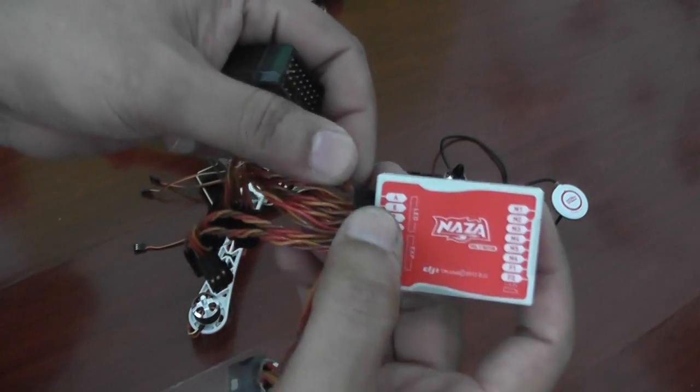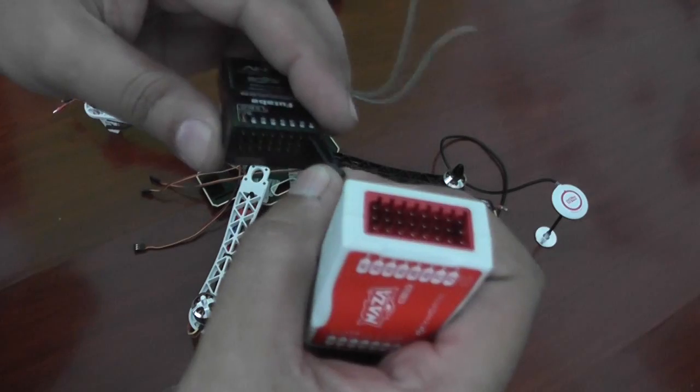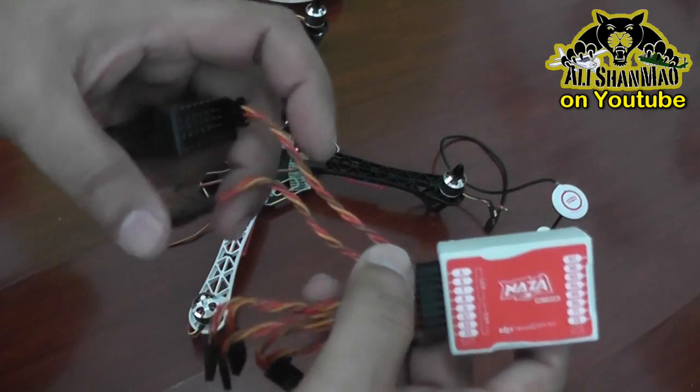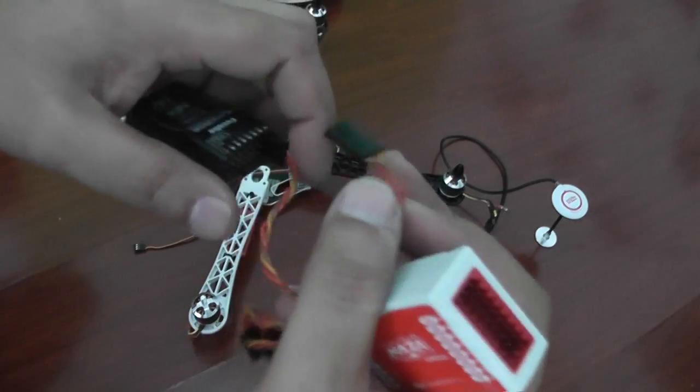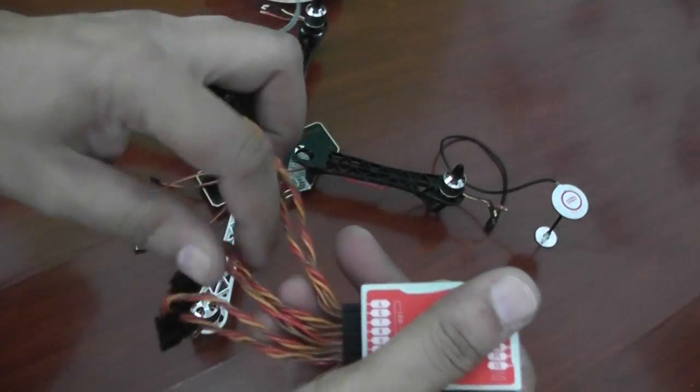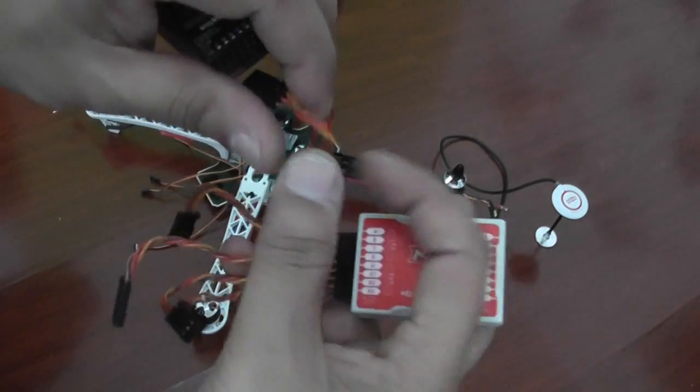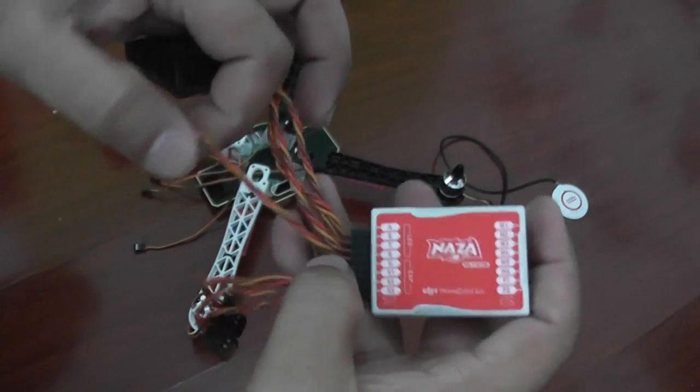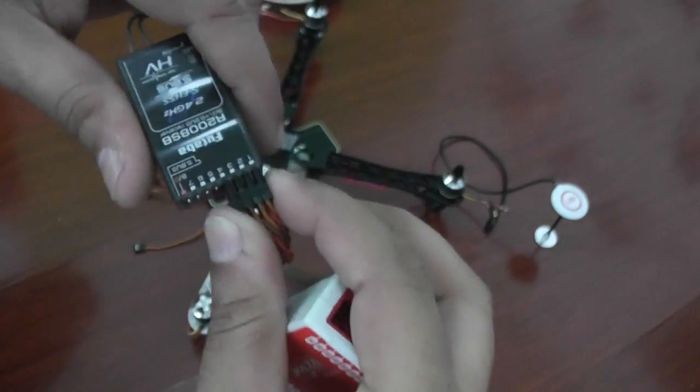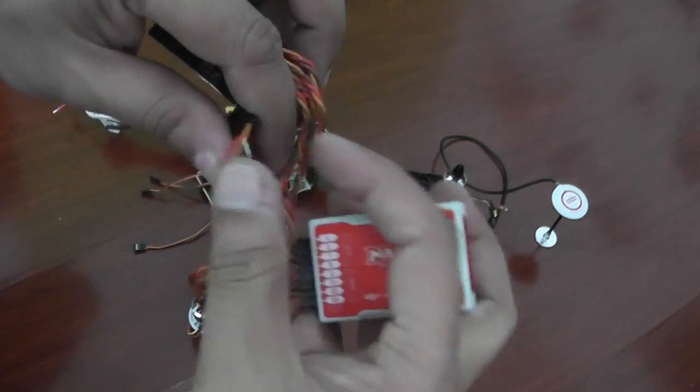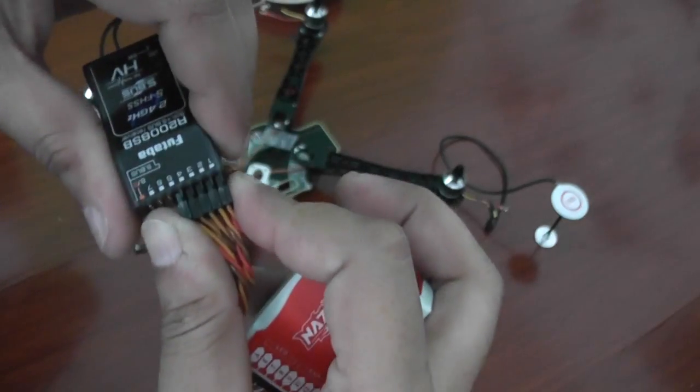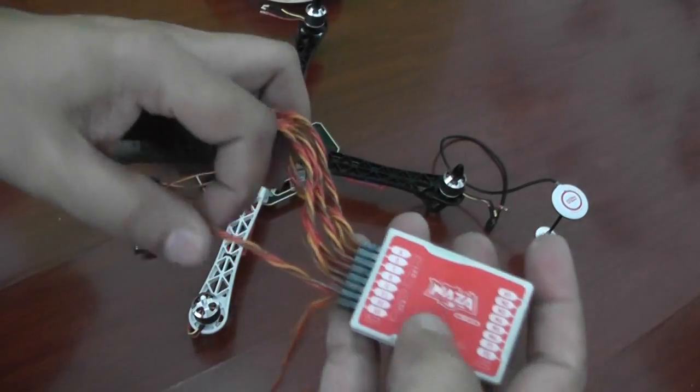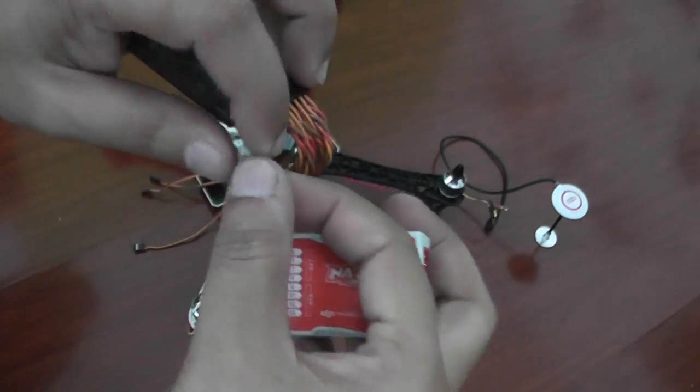From DJI NAZA, aileron will connect to your channel 1 because on Futaba channel 1 is your aileron. Then from DJI NAZA elevator will connect to channel 2. Throttle from DJI NAZA will connect to channel 3. Rudder from DJI NAZA will connect to channel 4. Channel U from DJI NAZA will connect to channel 5. Channel X1 from DJI NAZA will connect to channel 6, and channel X2 from DJI NAZA will connect to channel 7.